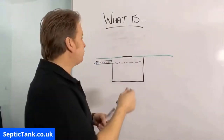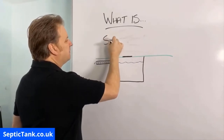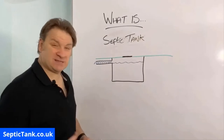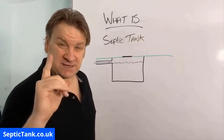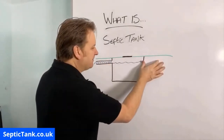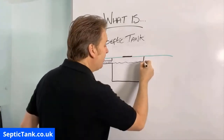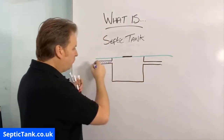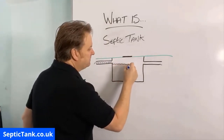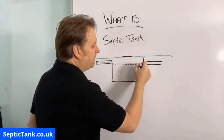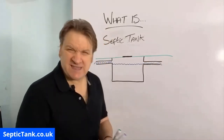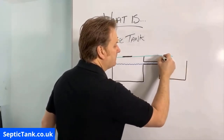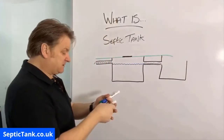So what is a septic tank? A septic tank differs in this way: you not only have an inlet but you've also got an outlet. All the wastewater comes into the septic tank, the level reaches the height of the outlet pipe, and from there the liquid makes its way down through the outlet pipe into a soak away.